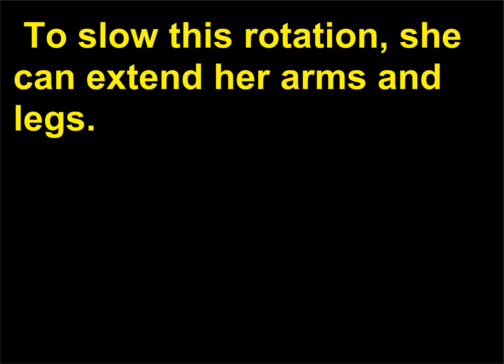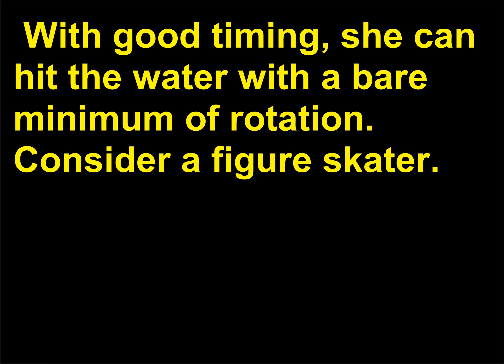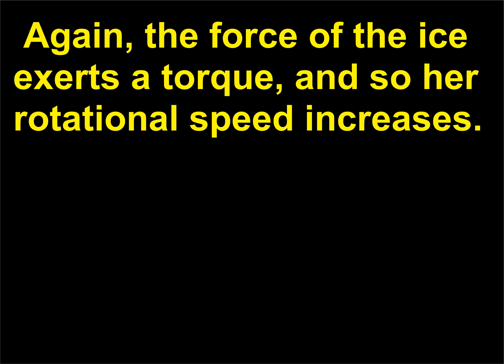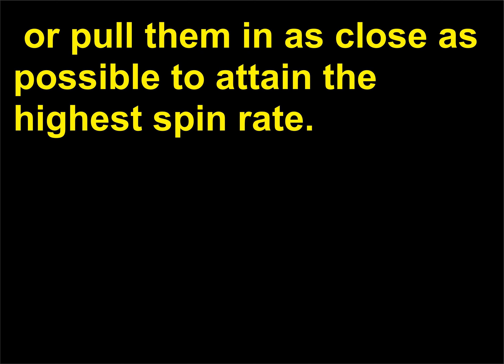To slow this rotation, she can extend her arms and legs. With good timing, she can hit the water with a bare minimum of rotation. Consider a figure skater: she can start spinning on the point of one skate by pushing on the ice with the second skate. The force of the ice exerts a torque and her rotational speed increases. She can extend her arms to slow the rotation, or pull them in as close as possible to attain the highest spin rate.